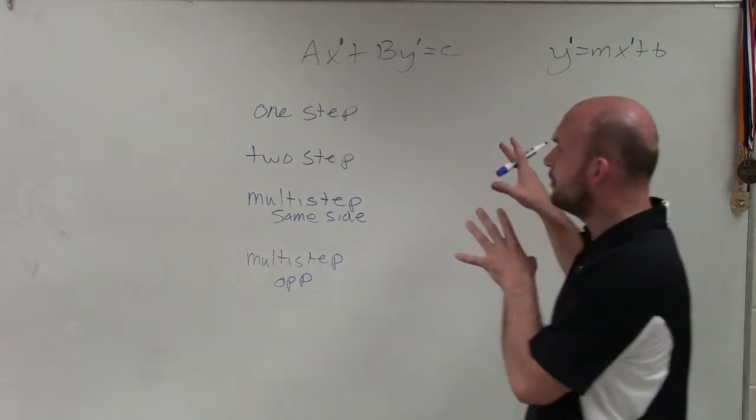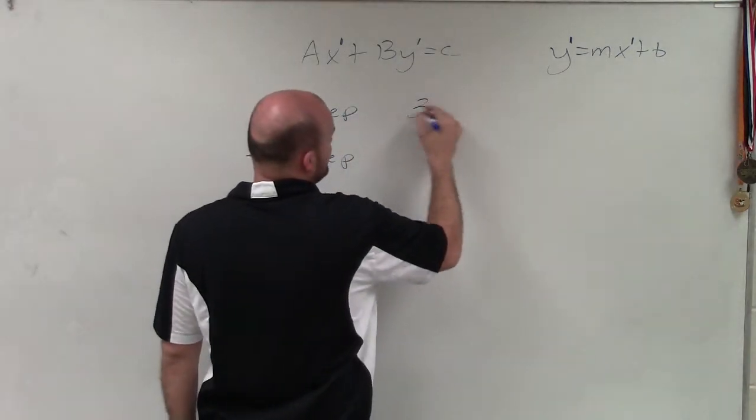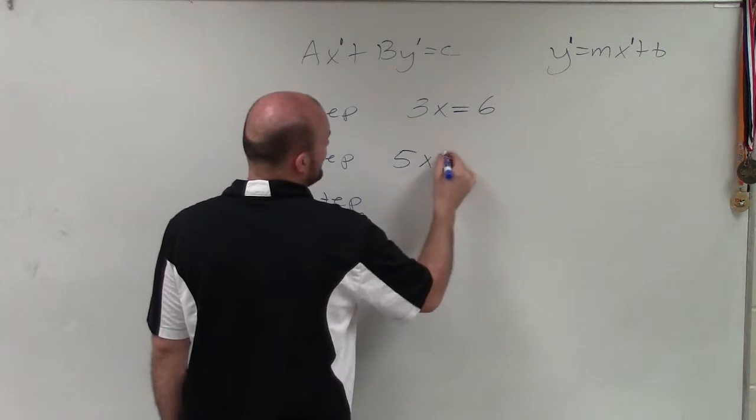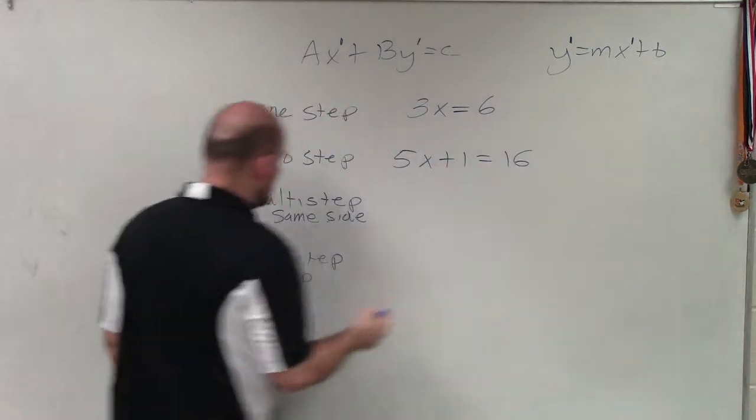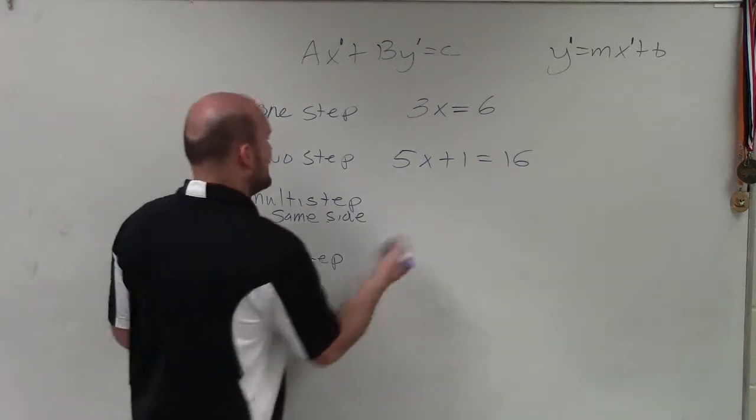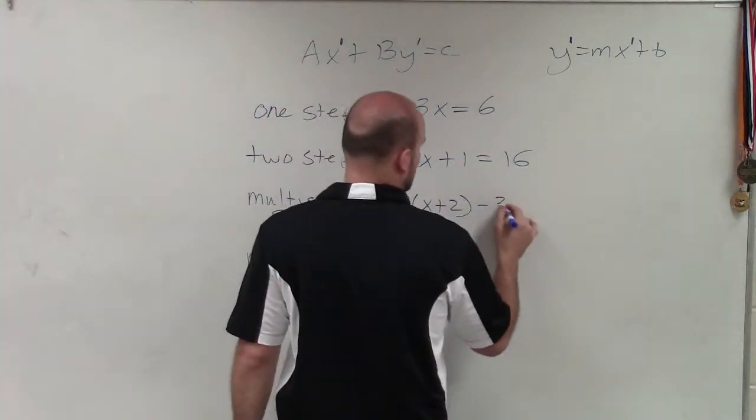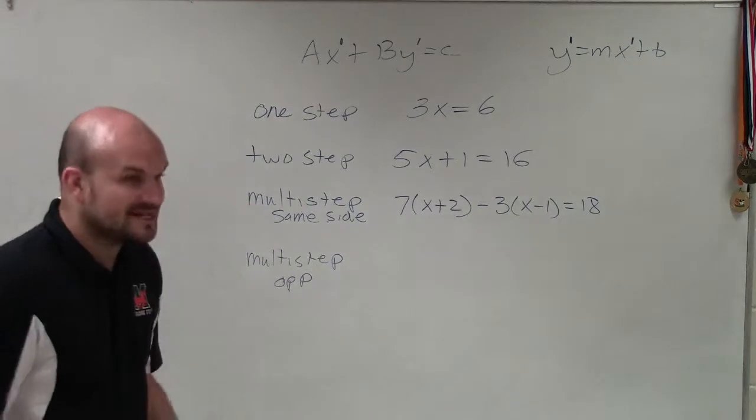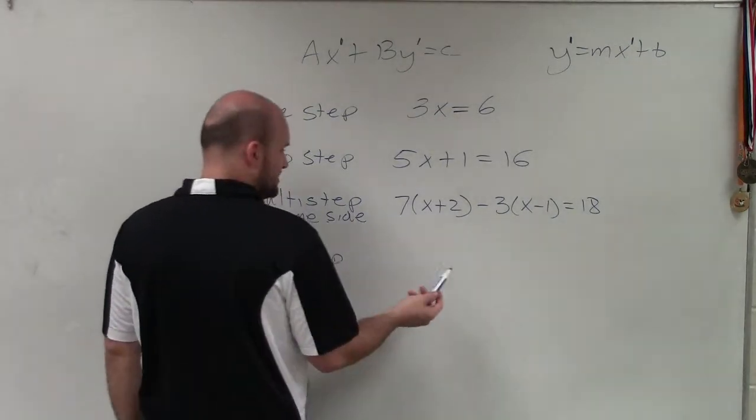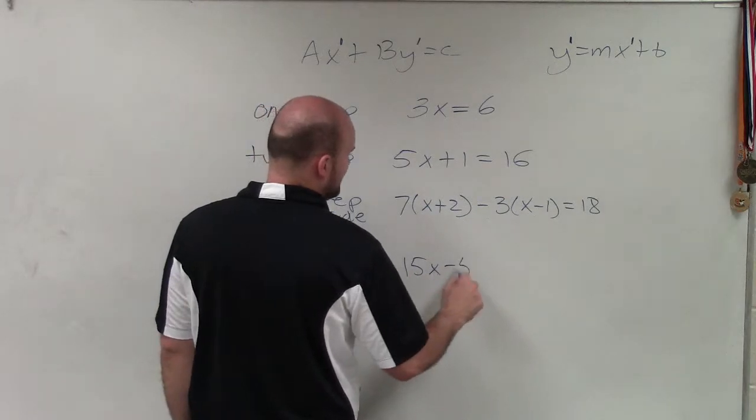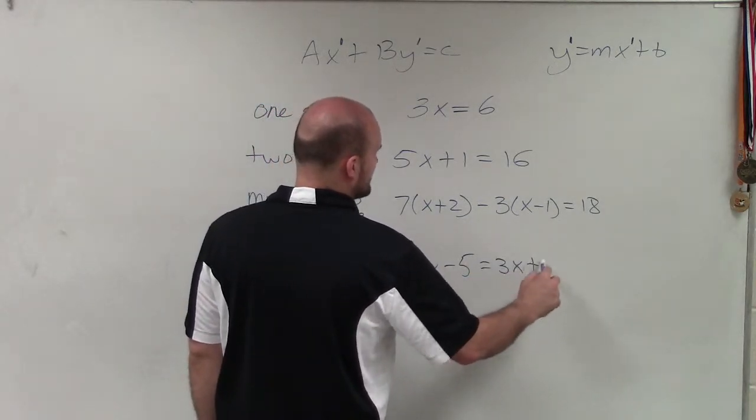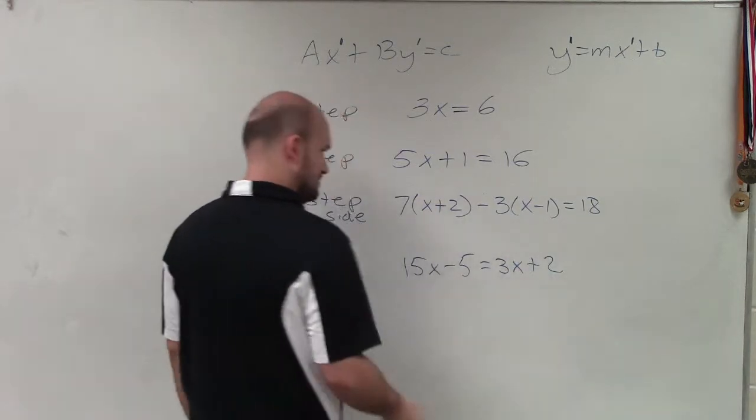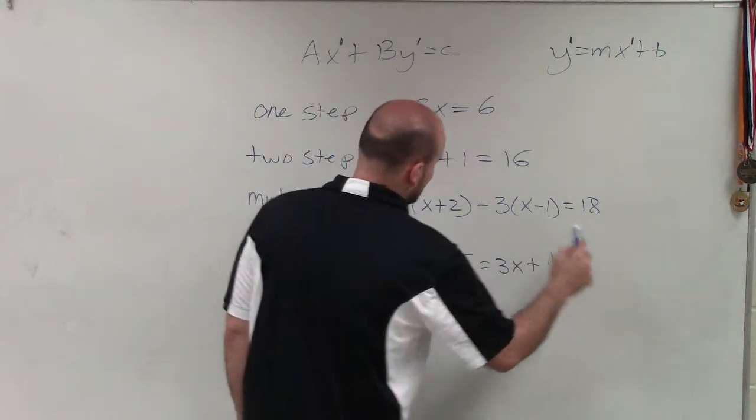So in examples of one-step equations, if I had an example would be like 3x equals 6. A two-step equation could be like 5x plus 1 equals 16. Multi-step, when you have variables on the same side, could be something like 7 times x plus 2 minus 3 times x minus 1 equals 18. And then a multi-step, when you have variables on opposite sides, could be as simple as something 15x minus 5 equals 3x plus 17. Just making something up.